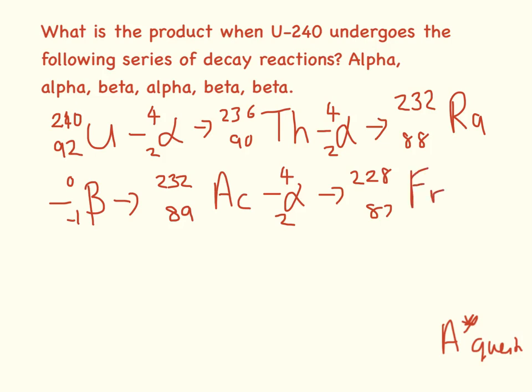We've done alpha, alpha, beta, alpha, beta next. 0 minus 1. So 228 minus 0 is 228. 87 minus minus 1 is 88. Look 88 up on the periodic table and it is radium.